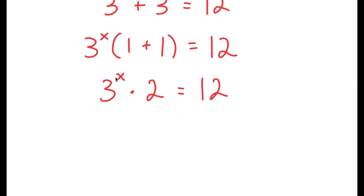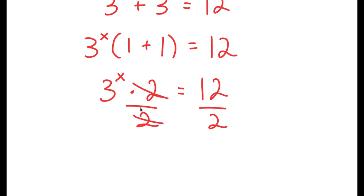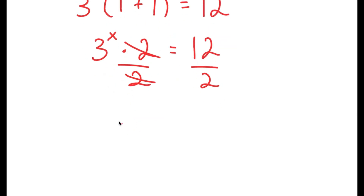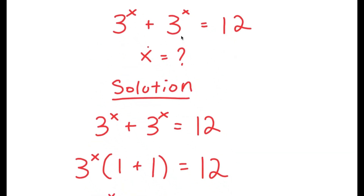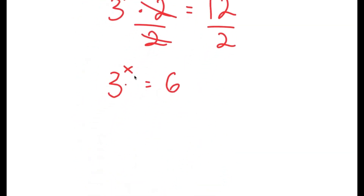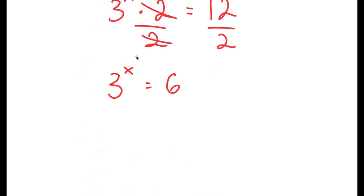From here, we want to isolate x. To do that, we have to get rid of this times 2 by dividing both sides by 2. So now these two cancel out and I'm left with 3 to the power of x is equal to 12 divided by 2, which is 6. Now I have a much more simplified equation: 3 to the power of x is equal to 6.